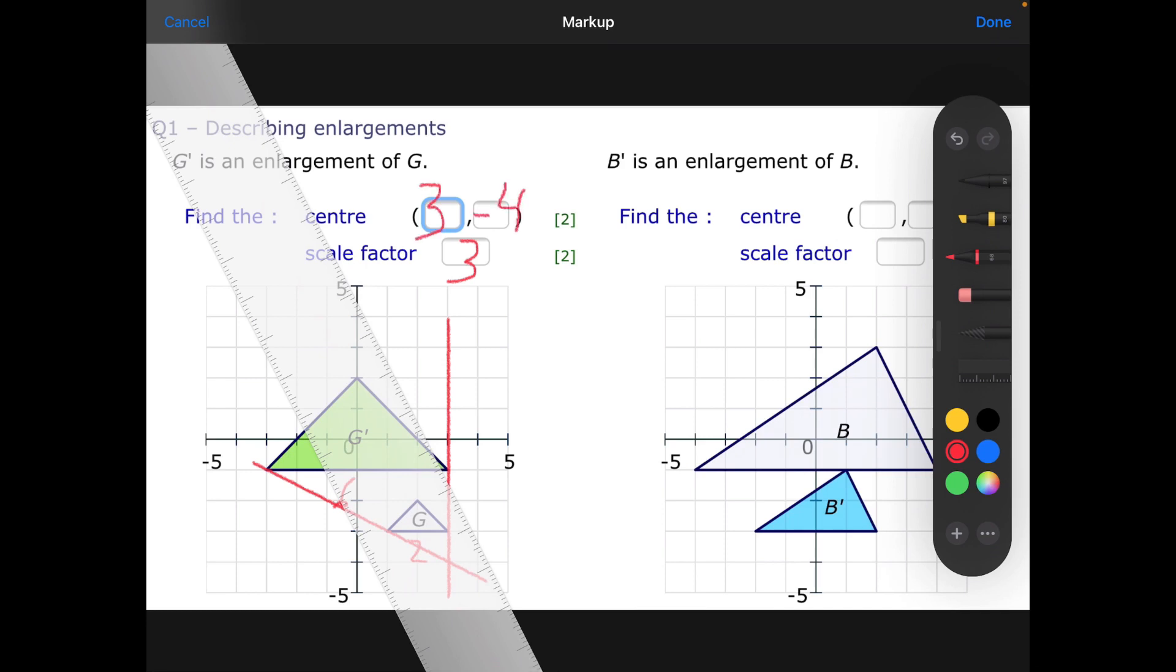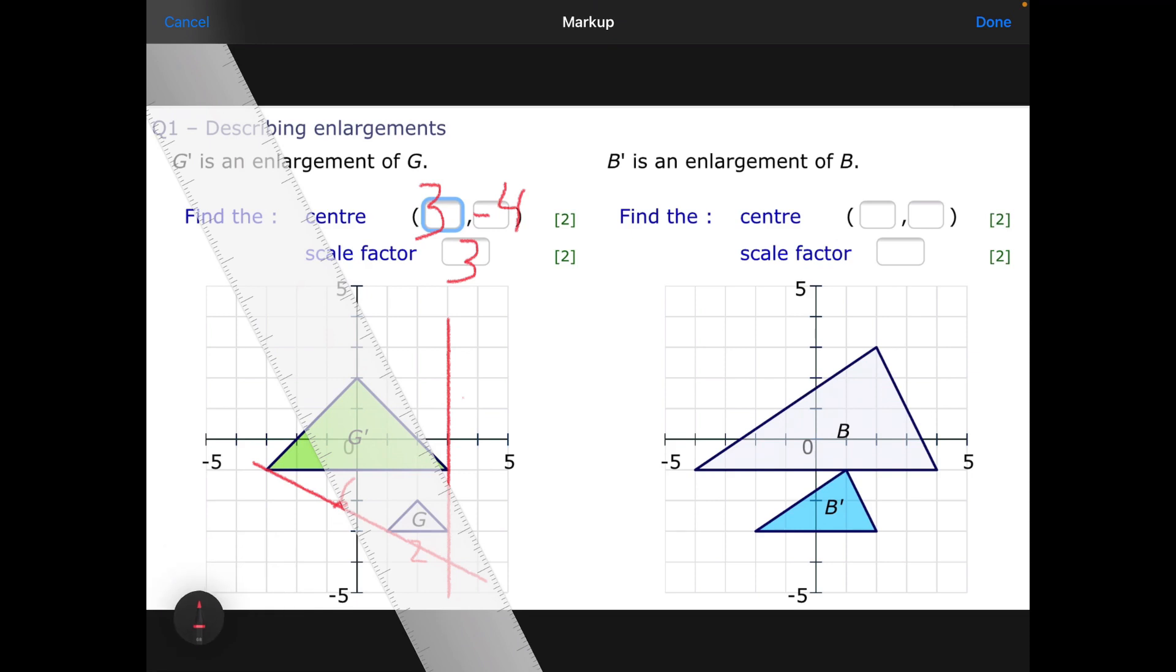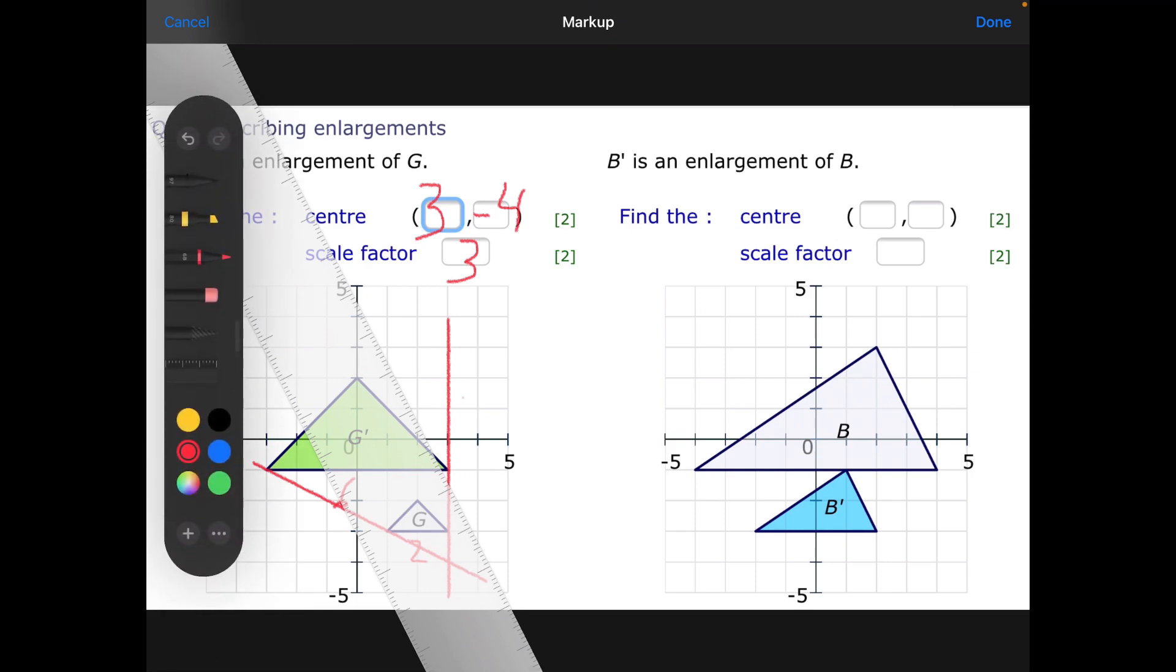Sorted, easy. Now let's look at the one on the right. They tell me that B' (B dash), the blue triangle, is the enlargement of the bigger one. We've ended up with a smaller one, so if the enlargement has resulted in a smaller triangle, that means the scale factor must be a fraction. This is 4 long, and the other one is 8 long. So 4 divided by 8 is a half. The scale factor is 1/2. Remember, it's an enlargement, scale factor a half.